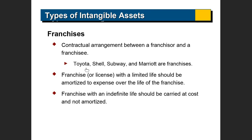A franchise is the right to operate under the name of a particular company — such as Toyota, Subway, or Marriott. You pay a franchise fee and get the right to operate for a period of time. If it's five years, you amortize that over five years, and after five years you have to pay again. Then you amortize the new payment over the next five-year period for which you have the franchise right.